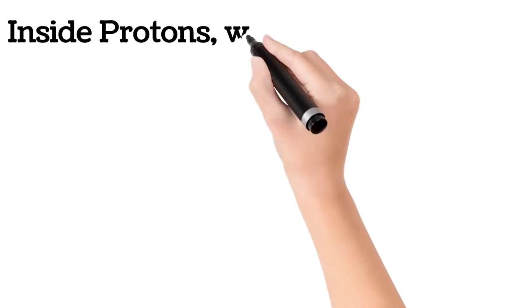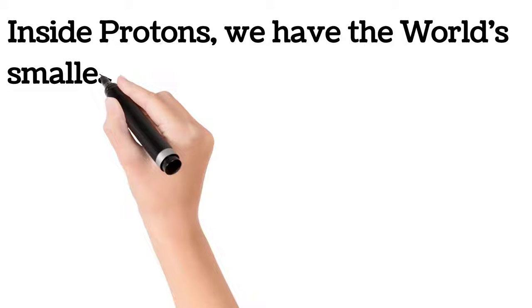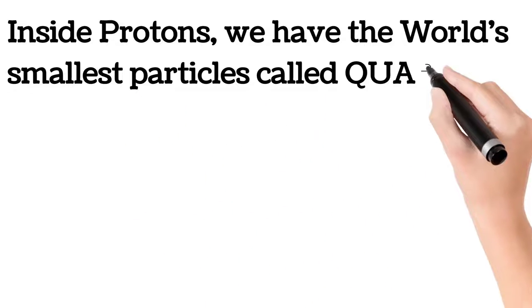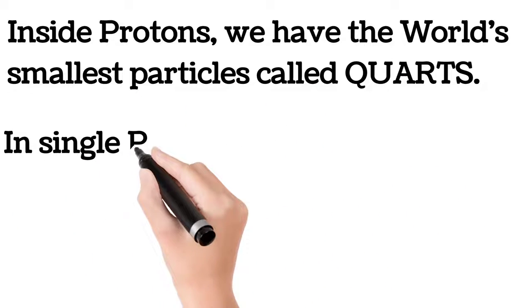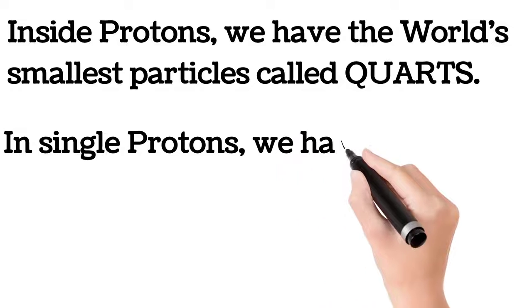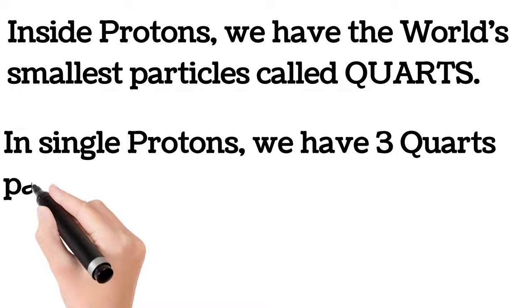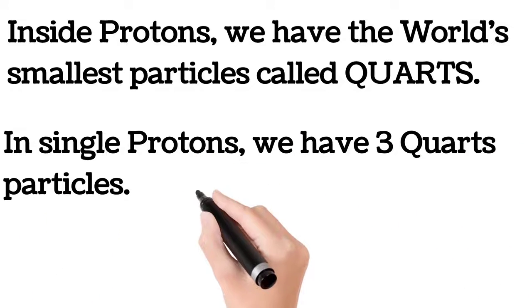Inside protons, there are the world's smallest particles called quarks. In a single proton, there are three quark particles - two up-quark particles and one down-quark particle.